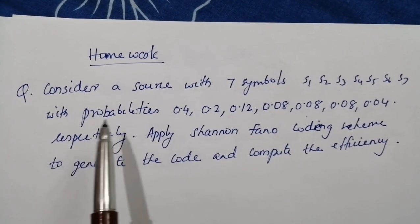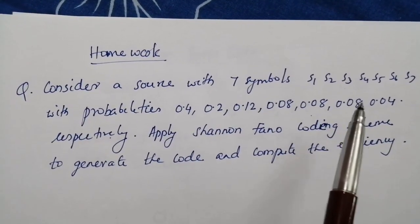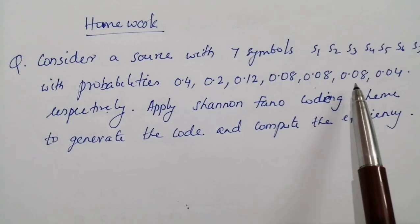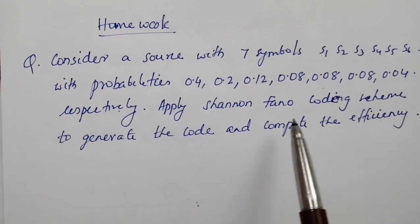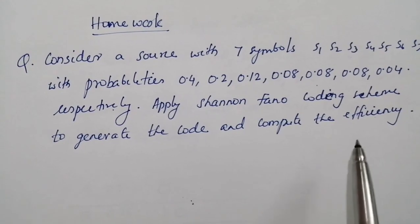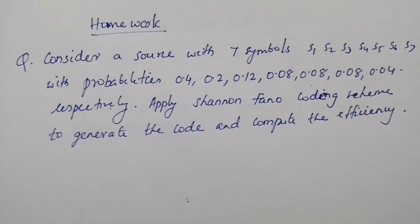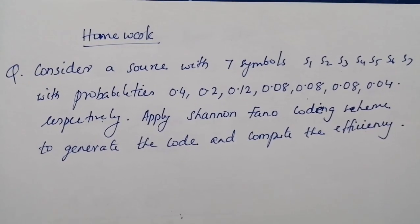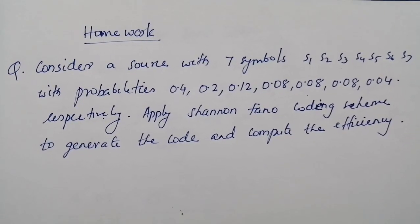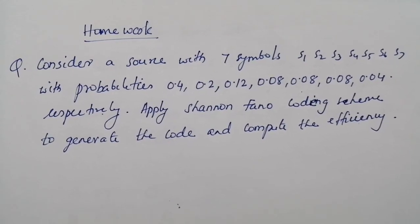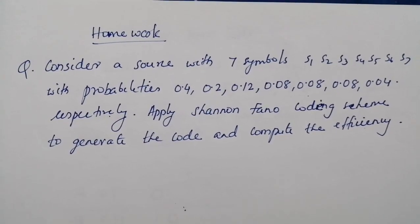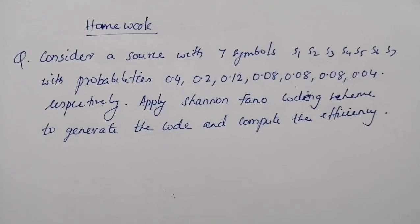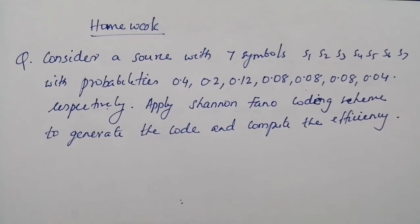As a homework problem, consider a source with 7 symbols S1, S2, S3, S4, S5, S6, S7 with probabilities 0.4, 0.2, 0.12, 0.08, 0.08, 0.08, and 0.04 respectively. Apply the Shannon-Fano coding scheme to generate the code and compute the efficiency. The clue is that after writing symbols in decreasing order of probability, you can divide them into two groups in two ways: in one method the first group has two symbols, and in another method the first group has only one symbol. Compute the efficiency for both methods and comment on your answer.